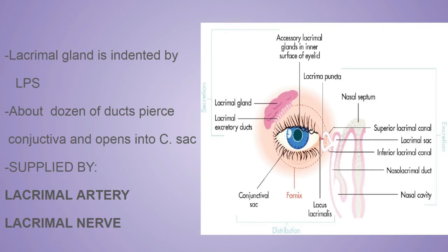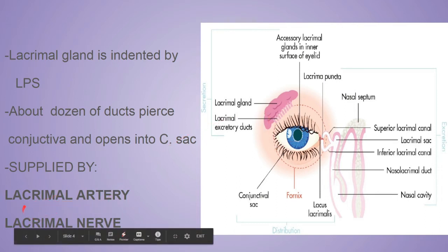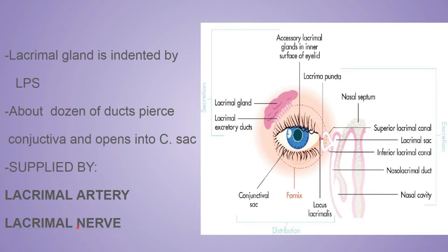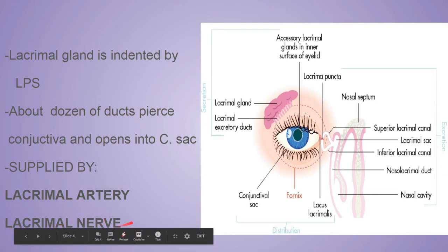The lacrimal gland is supplied by one artery and one nerve of the same name: the lacrimal artery, which is a branch of the ophthalmic artery — itself a branch of the internal carotid artery — and the lacrimal nerve. The lacrimal nerve has both sensory and secretomotor fibers. Whenever a dust particle or foreign body enters the eye, the sensory part detects it and the secretomotor part stimulates secretion of lacrimal fluid or tears.